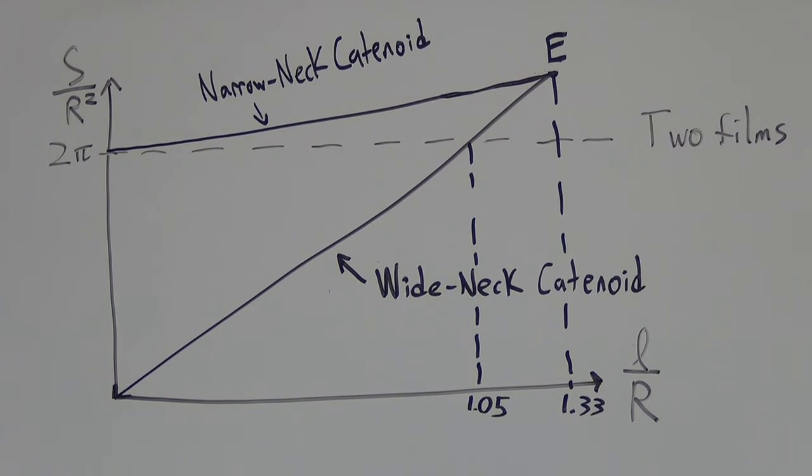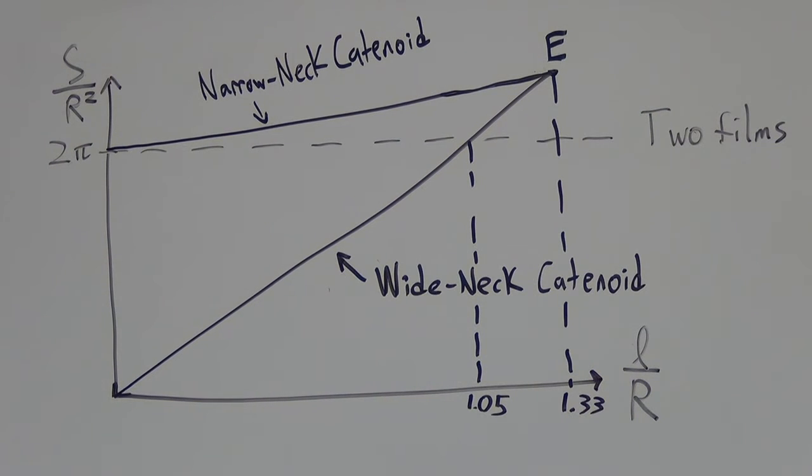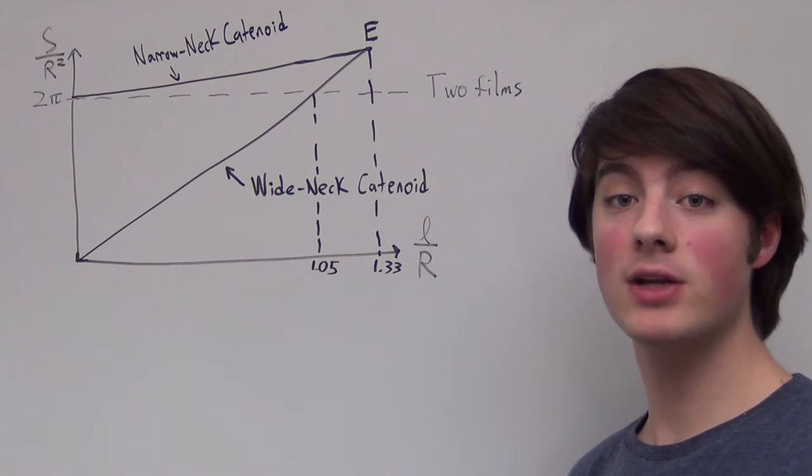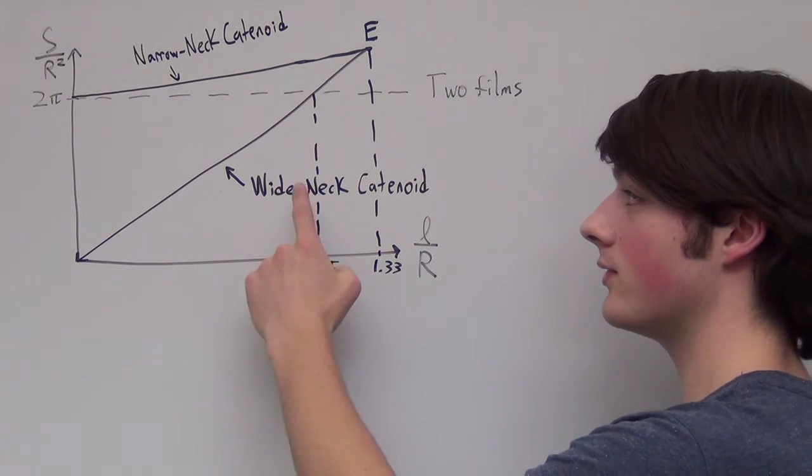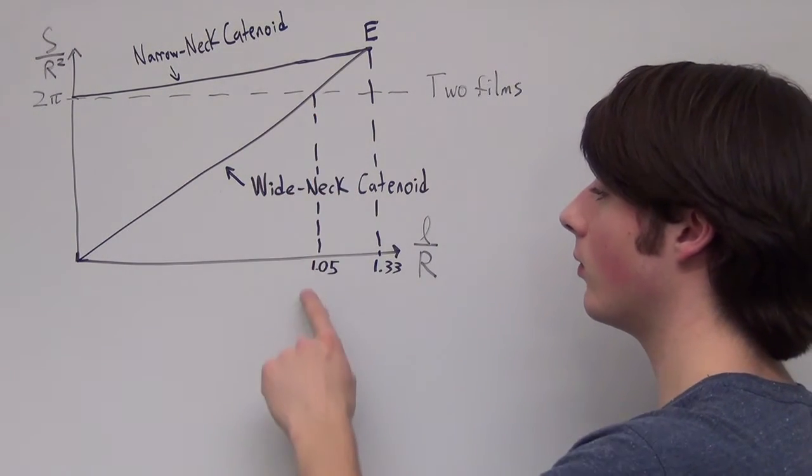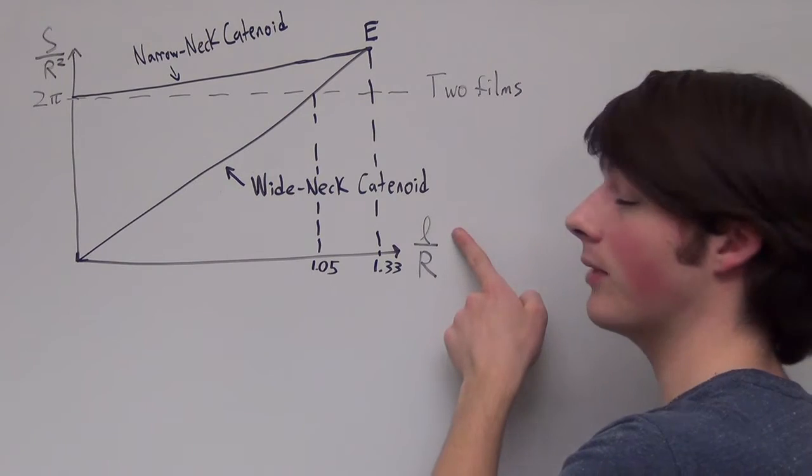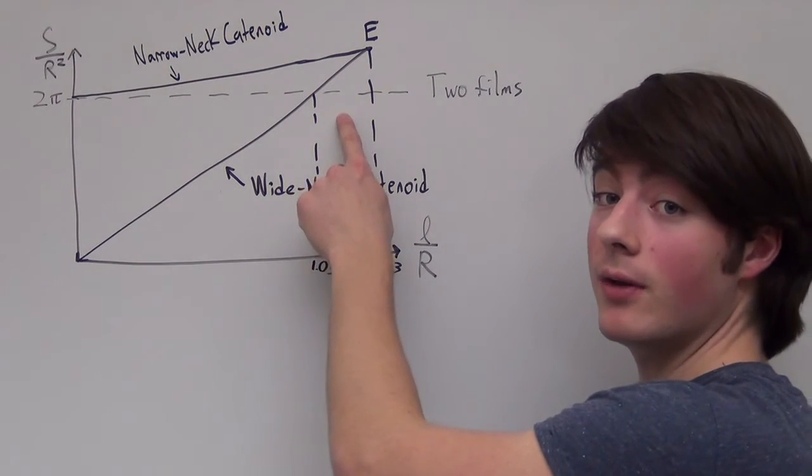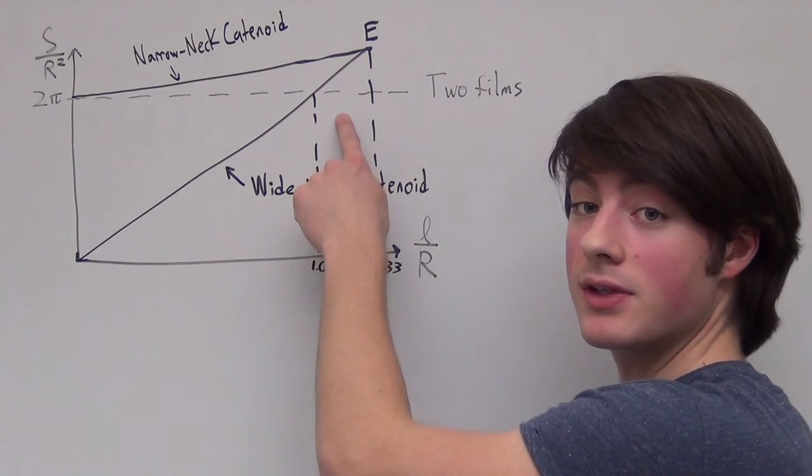Thus, this solution is unstable since the soap bubble wants to be at the lowest surface area possible. For most separation lengths, the wide neck catenoid solution is the minimal surface area possible until we get to 1.05 times the separation length, at which point the two films become the minimal surface area possible.